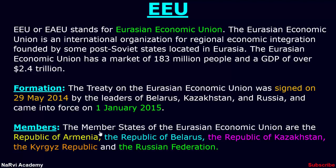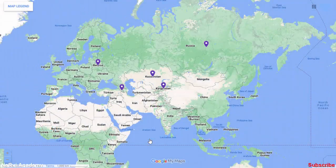The member states of the Eurasian Economic Union are the Republic of Armenia, the Republic of Belarus, the Republic of Kazakhstan, the Kyrgyz Republic, and the Russian Federation. Here we can see the exact location of the member countries on the world map. The members are Russia, Belarus, Armenia, Kazakhstan, and Kyrgyzstan.